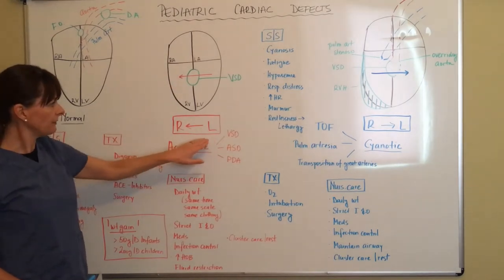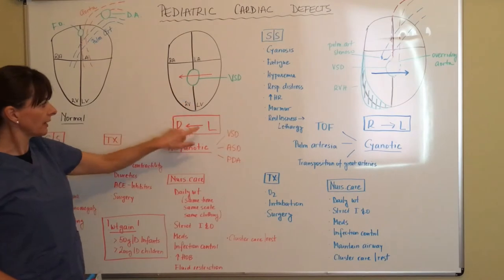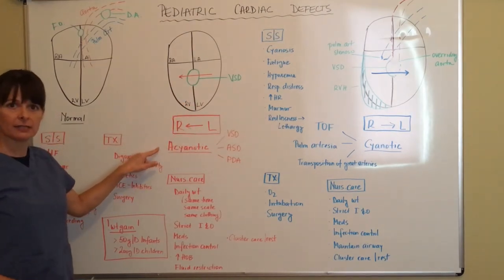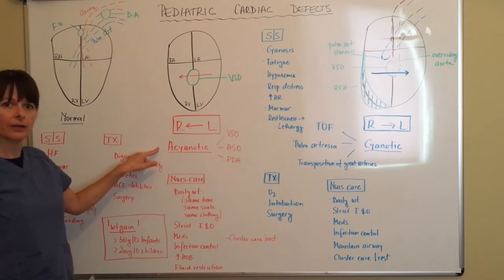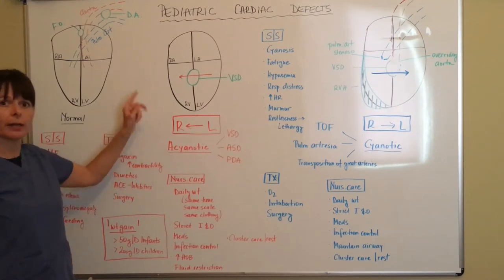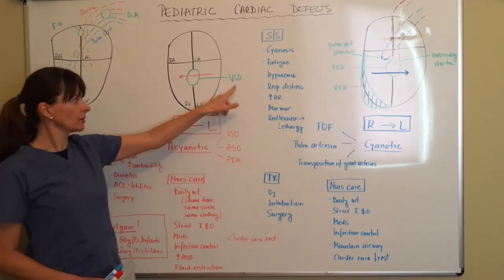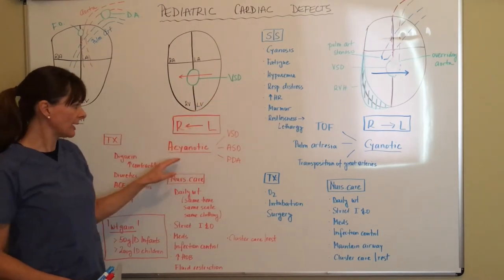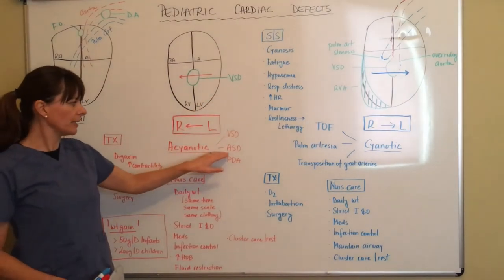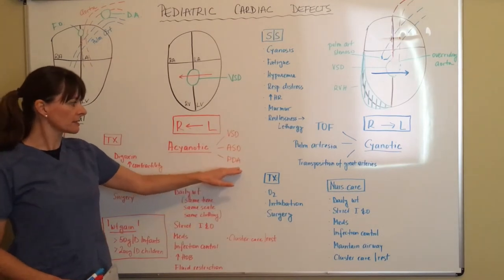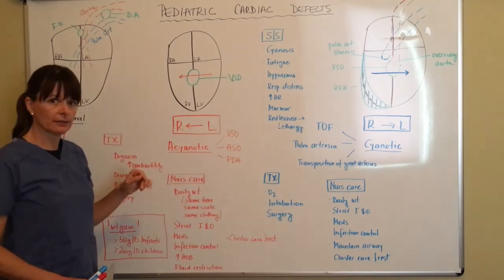That's why left to right shunting, as you can see, the arrows here match are acyanotic defects. Because there's no cyanosis, the blood actually gets circulated more to the lungs than it would usually. Now, some other examples besides ventricular septal defect that are acyanotic is atrial septal defect or ASD and patent ductus arteriosus that we discussed over here.